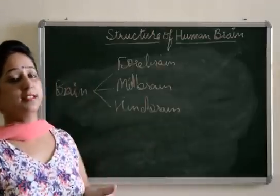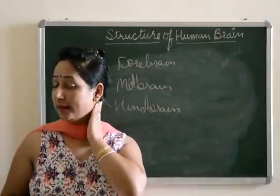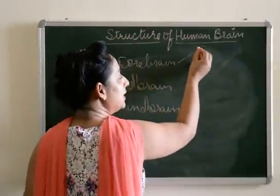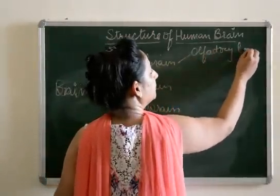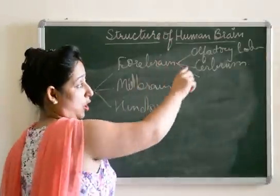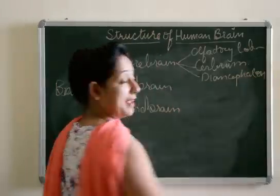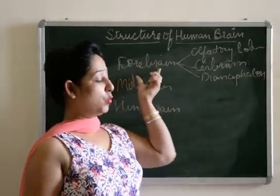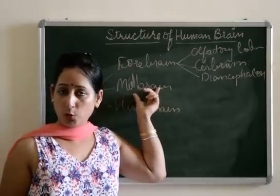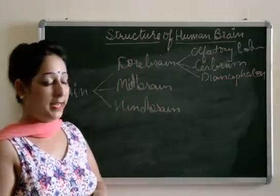The name itself suggests the location — forebrain is present in the front, midbrain is present in the middle, and hindbrain is present at the back. Under the forebrain, we study olfactory lobes, cerebrum, and diencephalon. Midbrain has no sub-parts; its role is simply to connect the forebrain with the hindbrain.